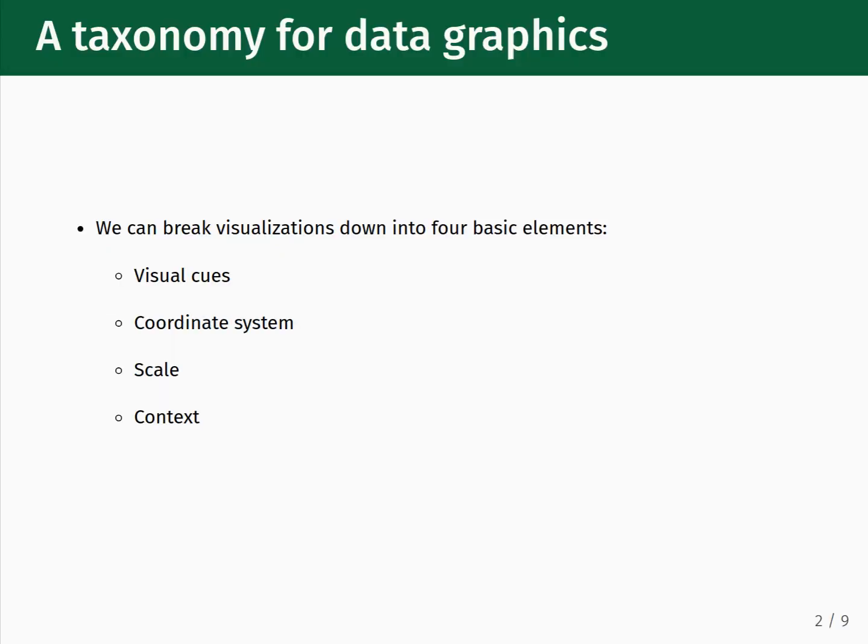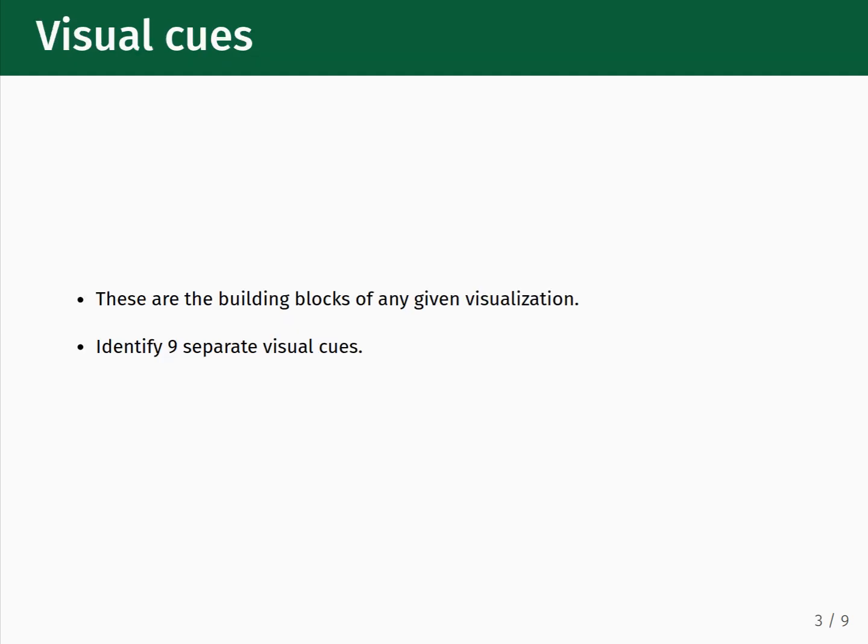Data visualizations follow enough of a pattern that we can devise a taxonomy for them. The elements of any given data visualization can be broken down into four basic elements: visual cues, coordinate systems, scale, and context. Visual cues form the building blocks of any given visualization.